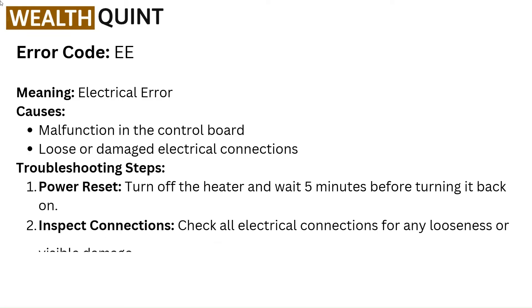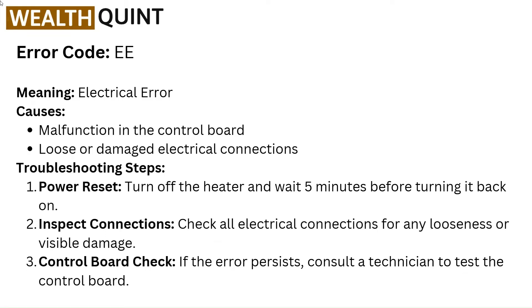Error code EE — meaning Electrical Error. Causes: malfunction in the control board, loose or damaged electrical connections. Troubleshooting steps: Power reset — turn off the heater and wait 5 minutes before turning it back on. Inspect connections — check all electrical connections for any looseness or visible damage. Control board check — if the error persists, consult a technician to test the control board.